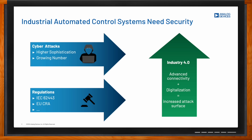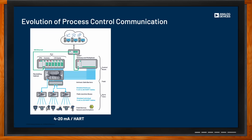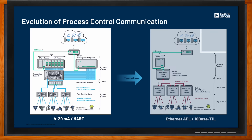We've talked about process control communication a couple of times here on Chalk Talk, and there has been quite a bit of evolution in this space. In the past, people would use traditional communication media such as the 4–20 milliamp current loop and HART protocols. Today the industry is moving to more advanced connectivity media such as Ethernet APL, or 10BASE-T1L, which is a single-pair Ethernet — opening more possibilities and flexibility in communication.